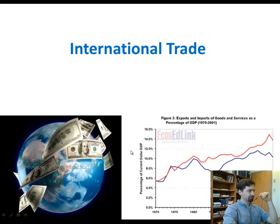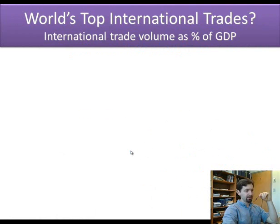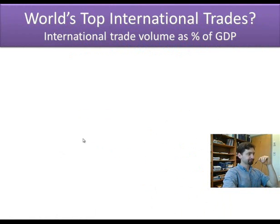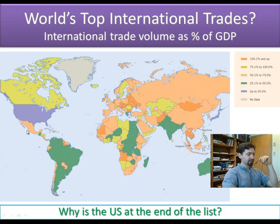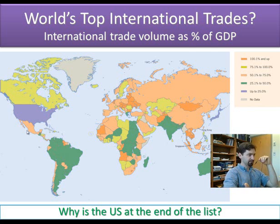Before we get into the theories of international trade, let's review some statistics — who trades with whom. For the world's top traders, it's difficult to talk about international trade as a total volume of trade, because countries are so different in size. Little Singapore trades a lot, and even though the overall volume is not huge, it is huge compared to the country's GDP. At the same time, the United States' overall volume may be huge, but it's really small compared to its GDP.